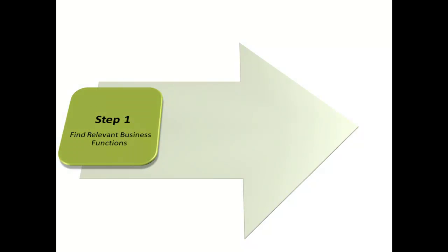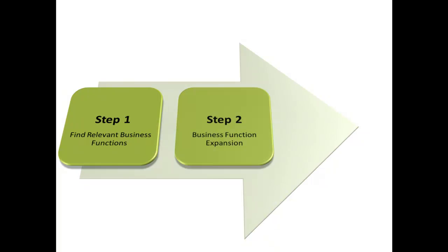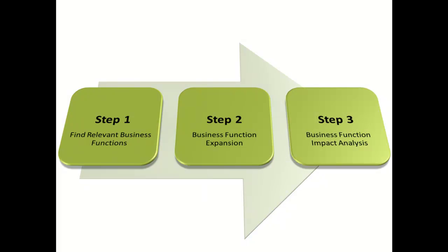Let's start by discussing the three steps that answer our most critical questions, from which business functions to consider to ultimately which executables should be tested. In step one, we'll discover which business functions are relevant based on production usage. In step two, we'll identify the enhancement objects related to the business functions. In the final step, we'll highlight impacted functionality that should be considered for testing.